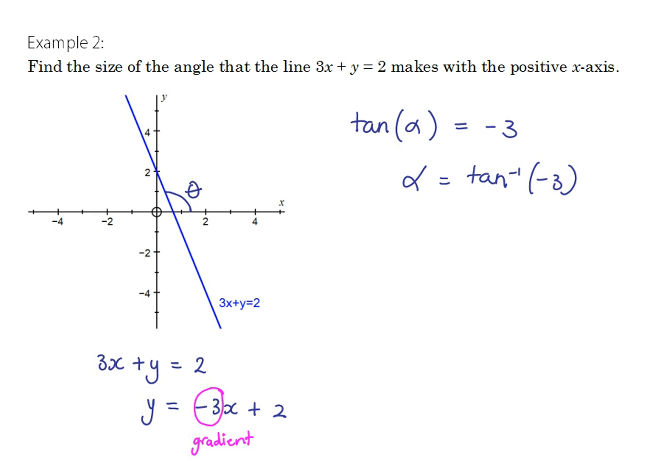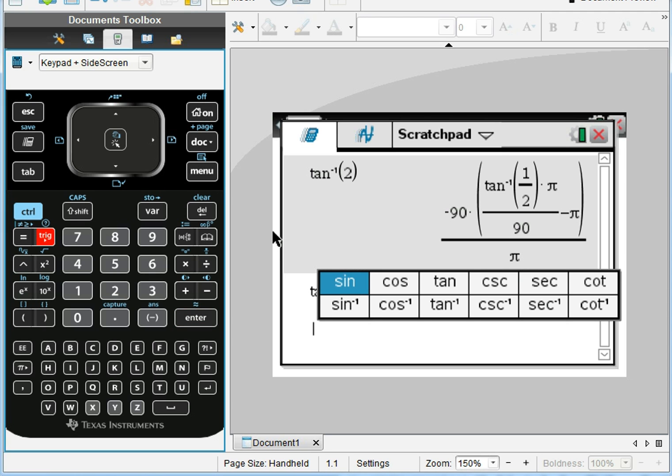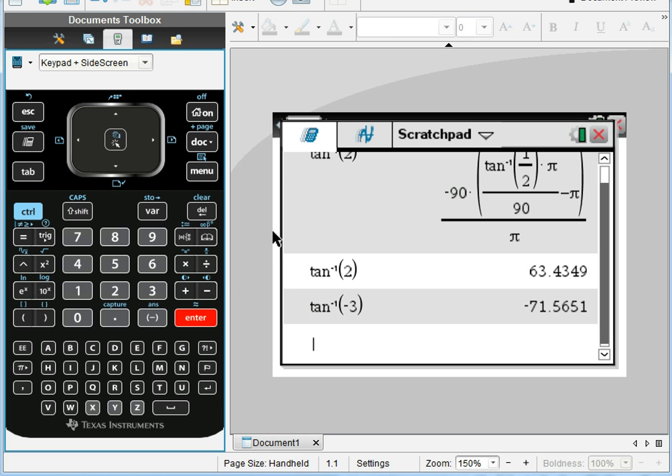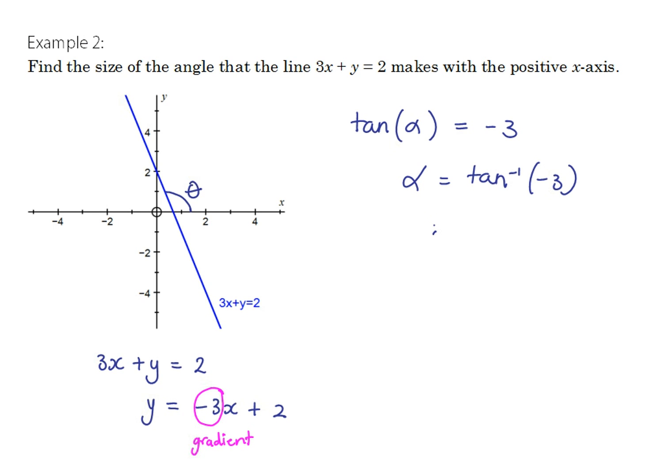So we'll just flip back over to the calculator to work that out. Trig button, inverse tan of negative 3. Control, enter. And you'll see here we get a negative angle. Now that doesn't make sense in our geometric problem, but let's have a little bit of a look at actually which angle that relates to in our diagram. So we found that alpha equals negative 71.57 degrees. And so we've been given an acute angle, but a negative acute angle. And actually we can think about this as being this angle in here. Negative 71.57 degrees.